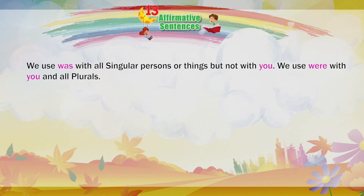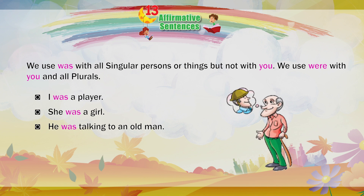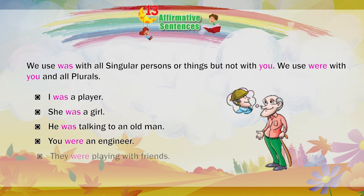We use 'was' with all singular persons or things, but not with 'you'. We use 'were' with 'you' and all plurals. I was a player. She was a girl. He was talking to an old man. You were an engineer. They were playing with friends.